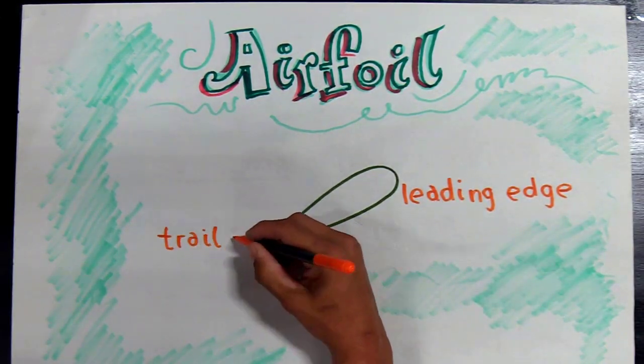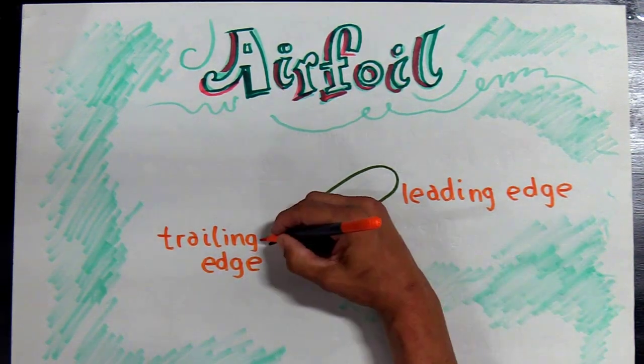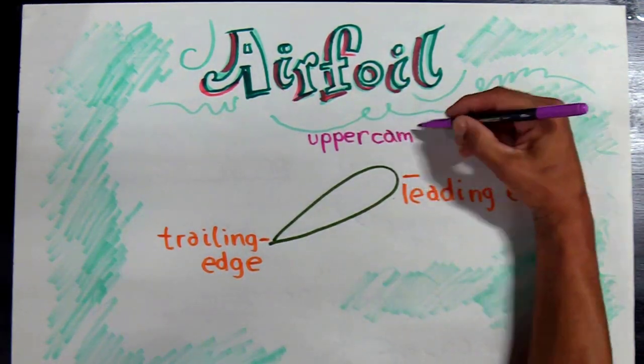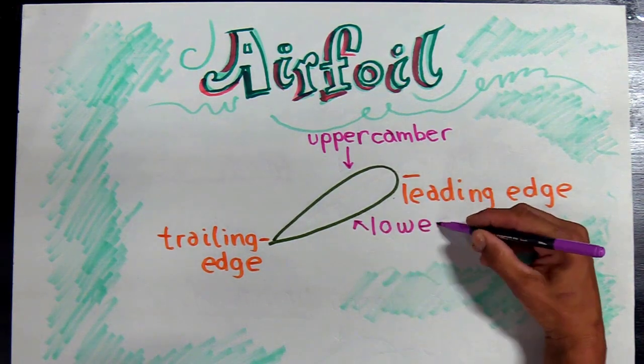Back here we have the trailing edge which just trails behind the leading edge. The upper camber is the upper curvature and the lower camber is the lower curvature.